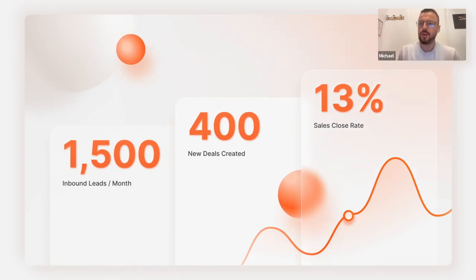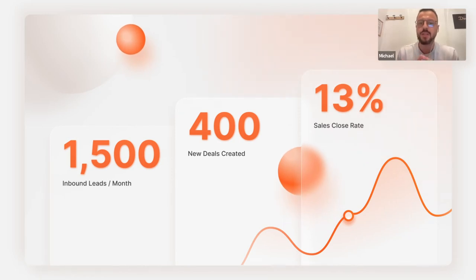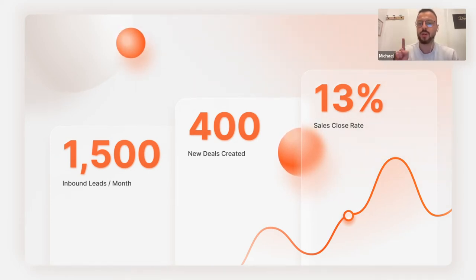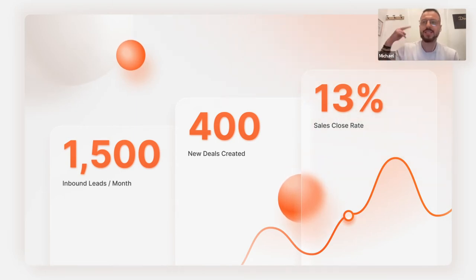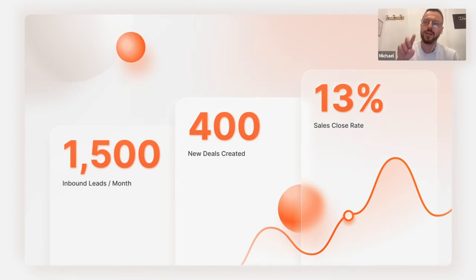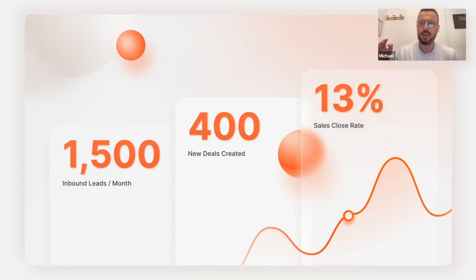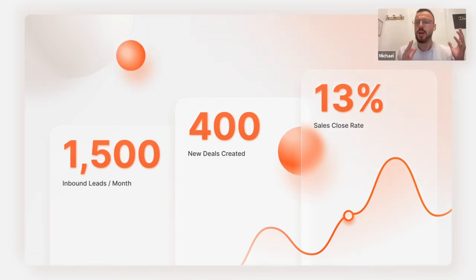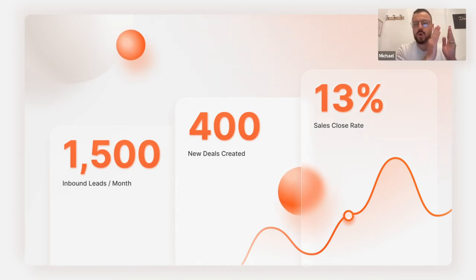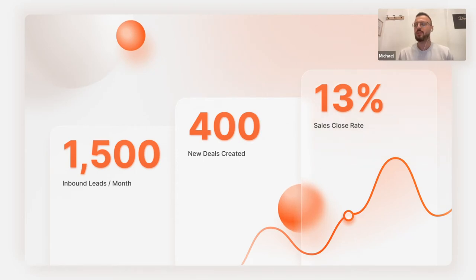Using this process, our numbers — specifically for the agency — are about 1,500 leads per month, approximately 400 new deals created, and a closing rate of 13%. These numbers are processed by only two BDRs. Two BDRs processing 1,500 leads — with about 40% conversion into appointments booked, a high closing rate, and a very high response rate. All leads are categorized, all are tracked, all are nurtured and taken care of. We were not able to achieve this without a clear streamlined process and a powerful technology partner like HubSpot.